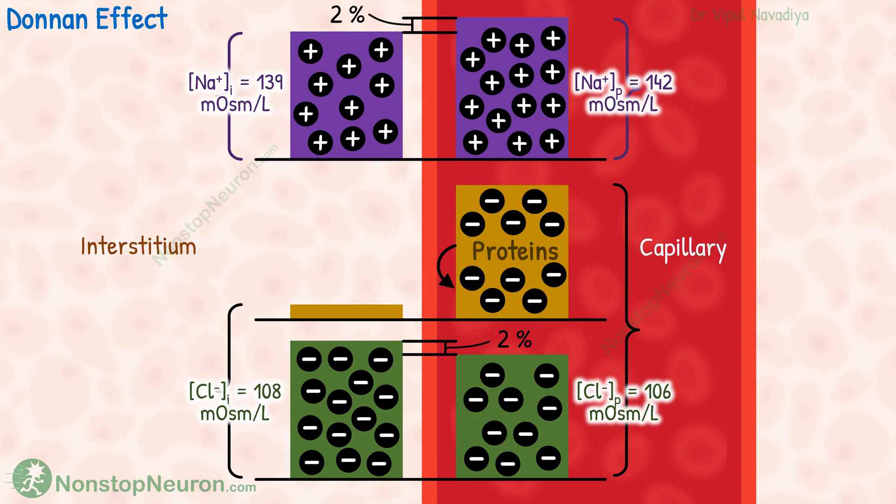So this was about the Donnan effect across the capillary wall. In summary, due to negatively charged proteins in the plasma, the concentration of positively charged ions is slightly more and that of negatively charged ions is slightly less in plasma. For practical purposes, this difference can be ignored.